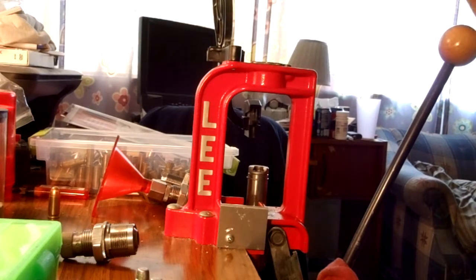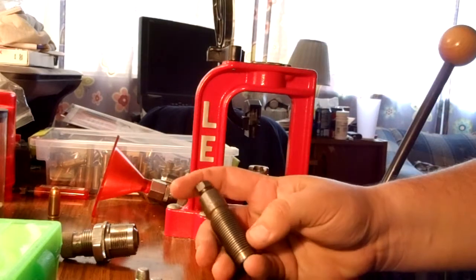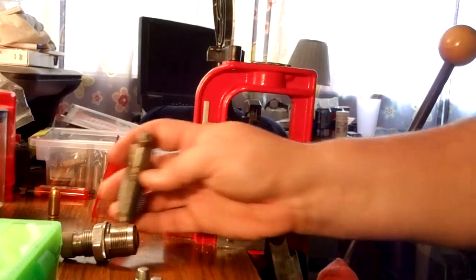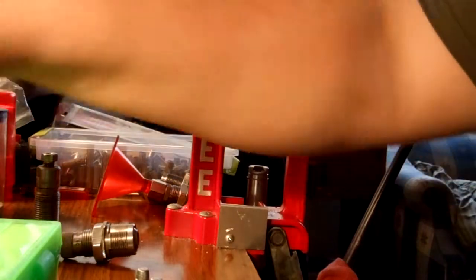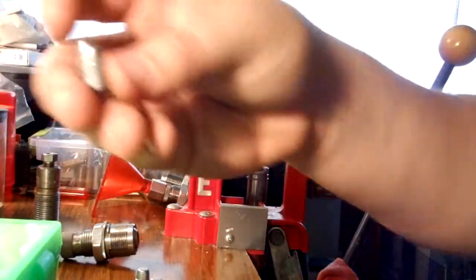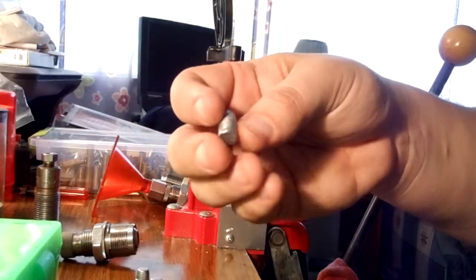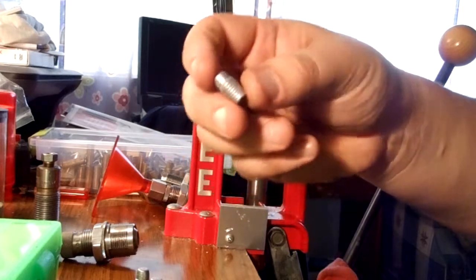But that's just a cheap and simple way to get by if you don't have a crimp die and you really need to reload some stuff. Like I said, most of your cast bullets you actually order will be sized dead on 358, unless you order them otherwise.